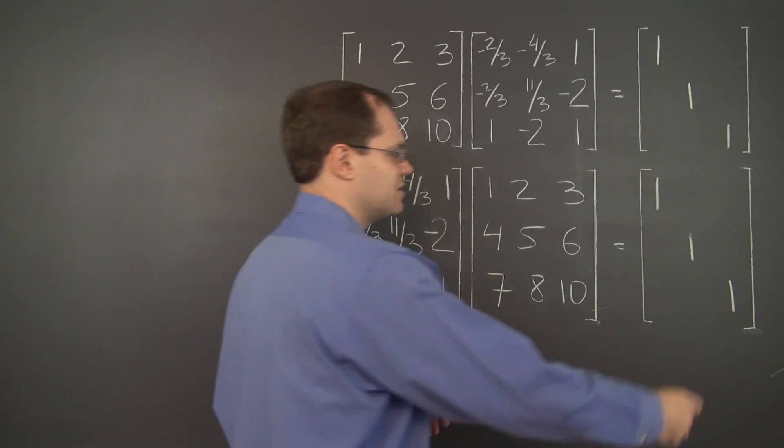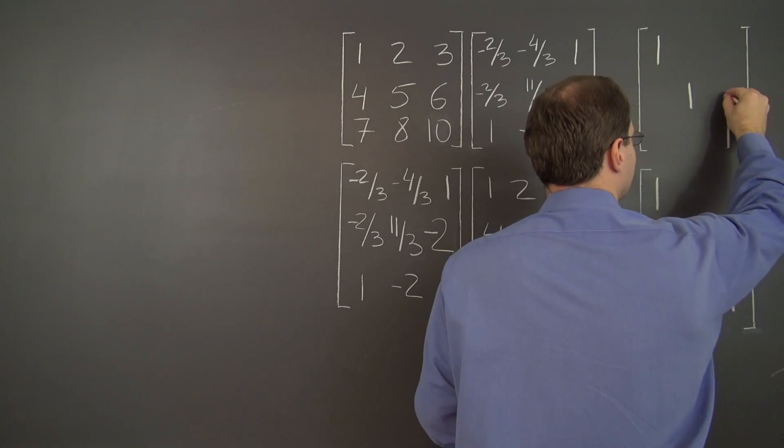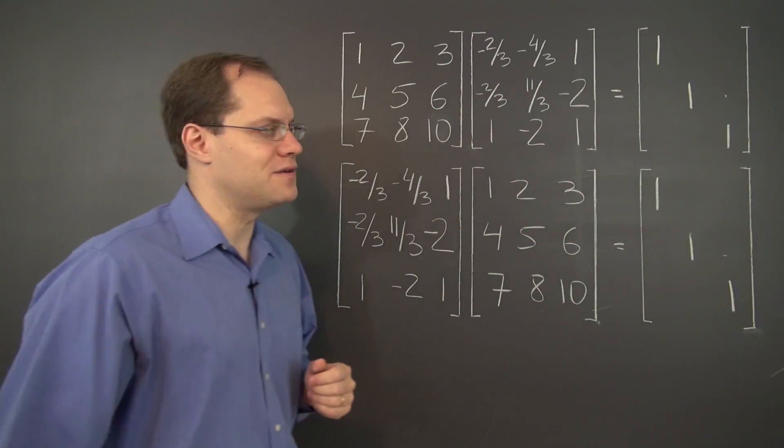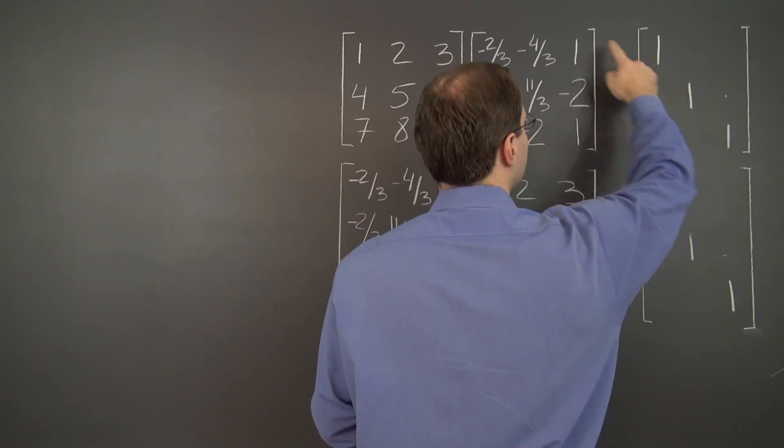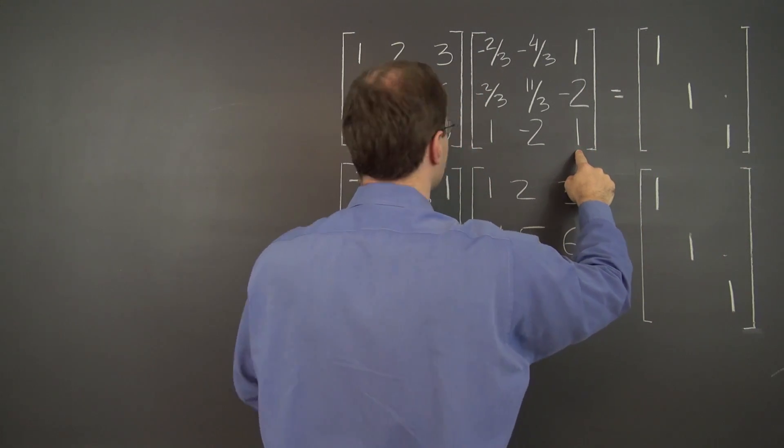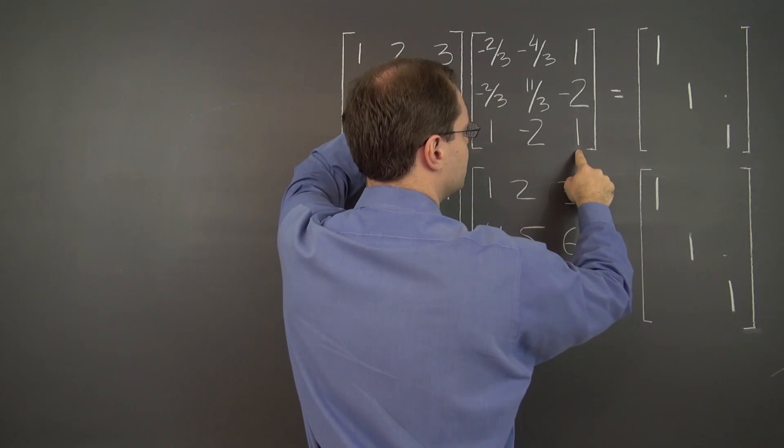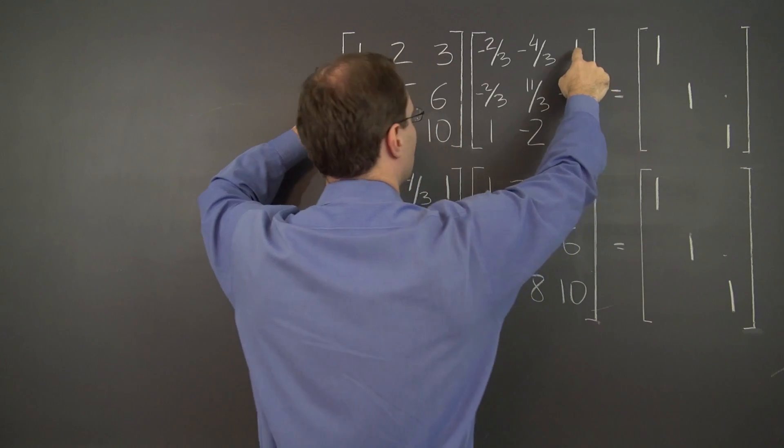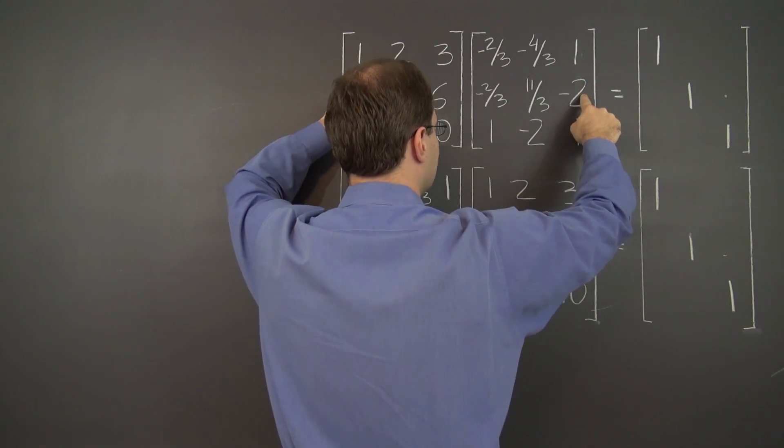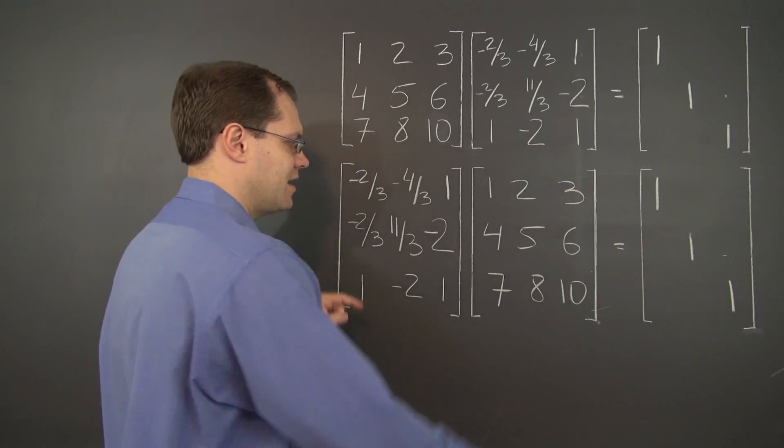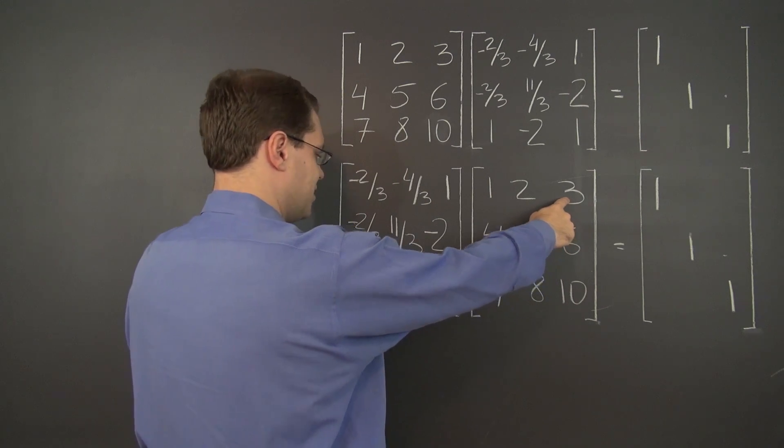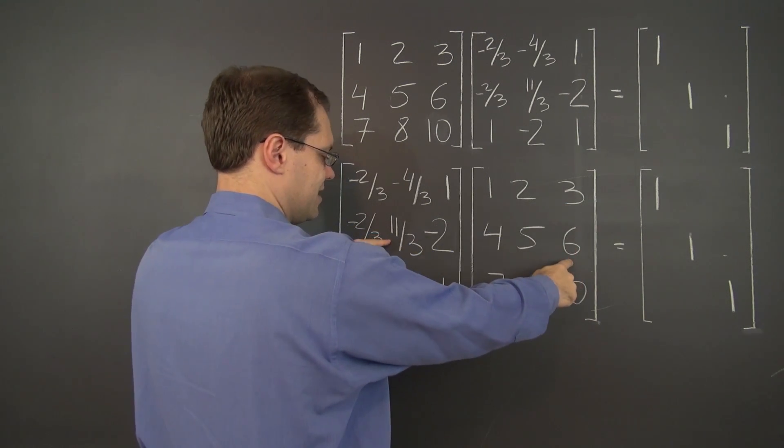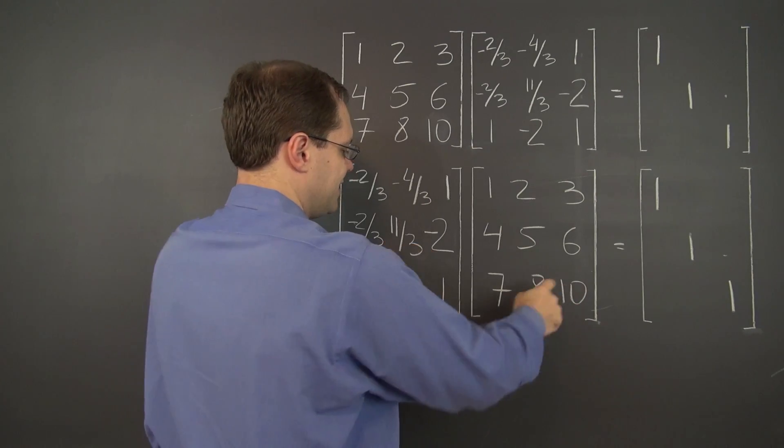Now if we consider a different entry, let's say this one, I don't believe there will be any overlaps. Let's see here, so we need to take 3rd column, 2nd row. Correct, 4 and 1, 5 and minus 2, 6 and 1. And in the second case, it's 3 and negative 2 thirds, 6 and 11 thirds, and 10 and negative 2.